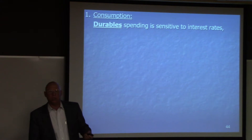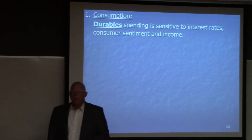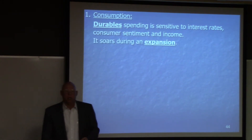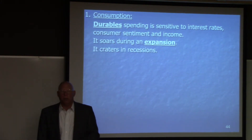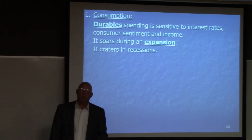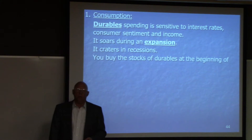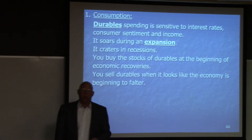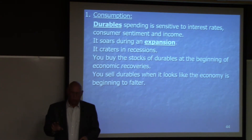Durable spending is sensitive to interest rates — they affect the cost of durable goods, principally cars, as well as consumer sentiment and income. Durable spending will go up during an expansion and go down hard during a recession. So understanding what affects durable spending helps you understand when to be in those stocks and when not to be. You buy durable stocks at the beginning of economic recoveries, and sell them when it looks like the economy is beginning to falter.